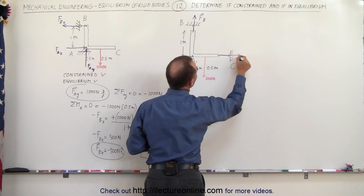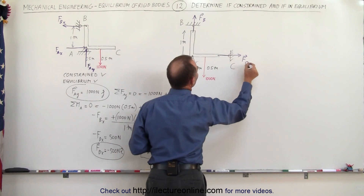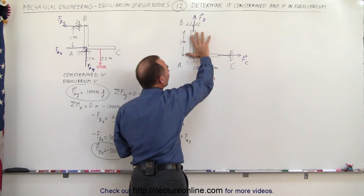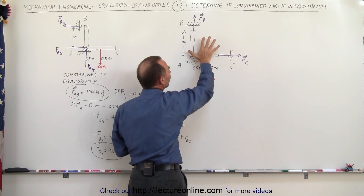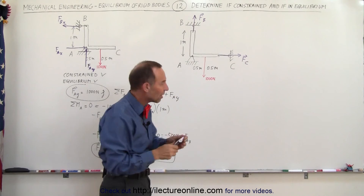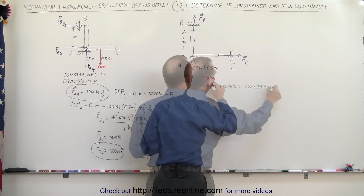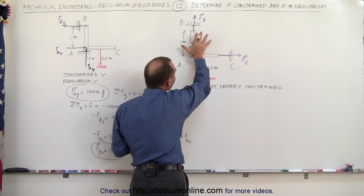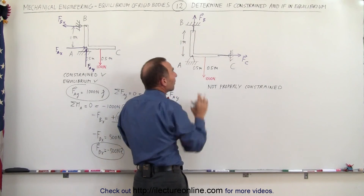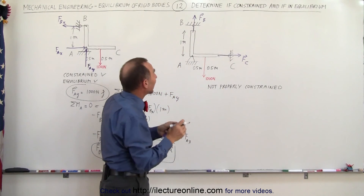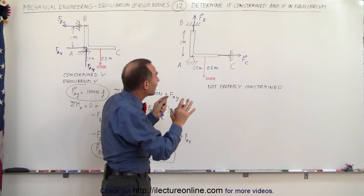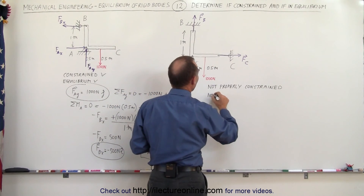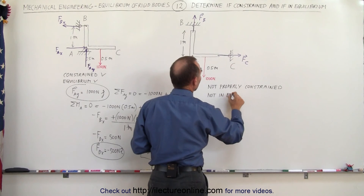The force at C can only pull in this direction. Neither of these two forces can prevent this thing from rotating, so it is not properly constrained. We know it's going to rotate — we don't know exactly where it will stop, as that depends on the strength and play in the cable.